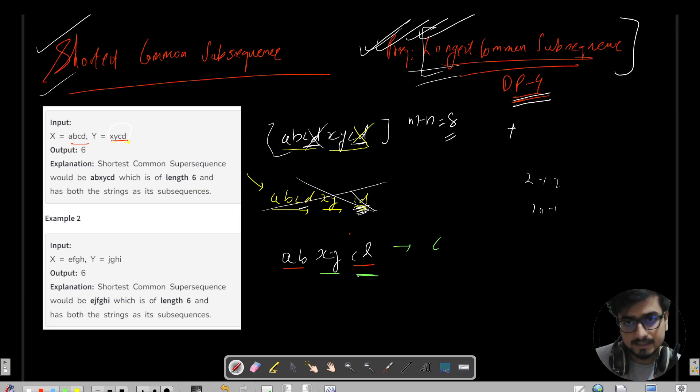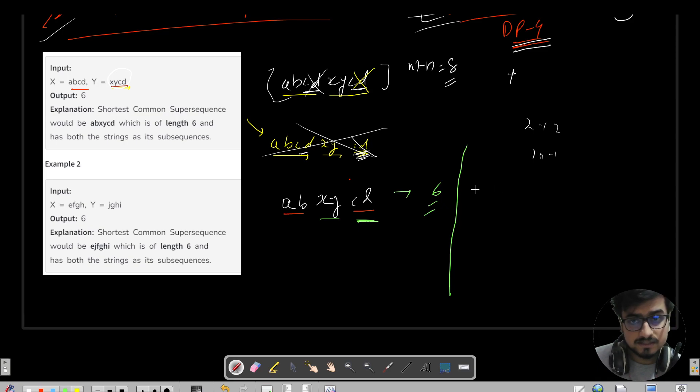So what is the length here? It is 6. The 6 is the answer. Similarly, let us do a dry run for the second example as well and then we will try to observe that can we do something regarding this Longest Common Subsequence.